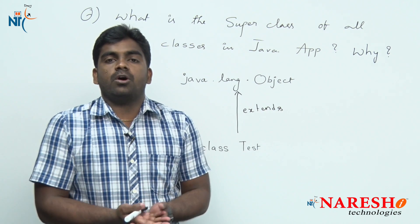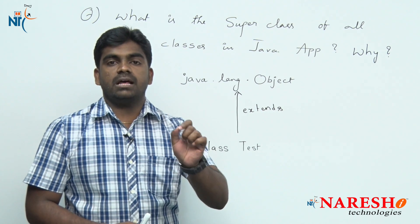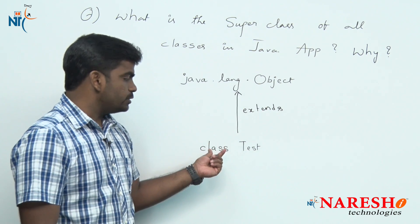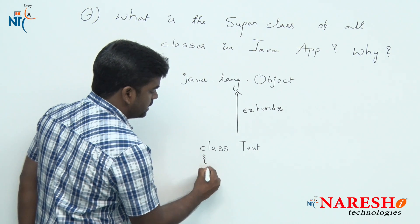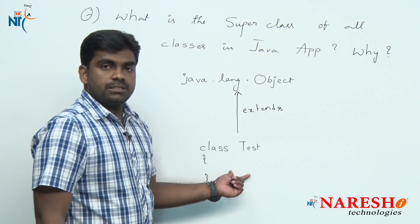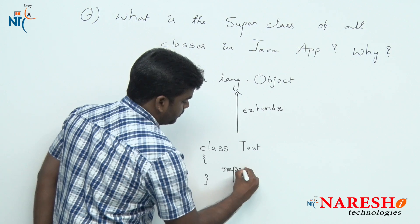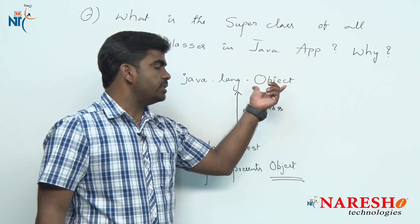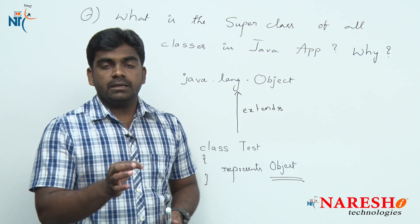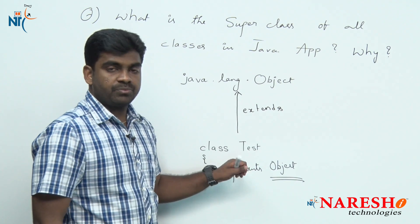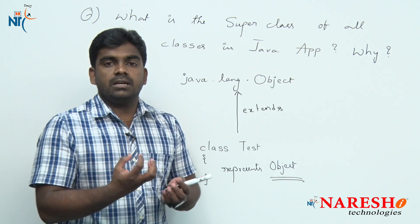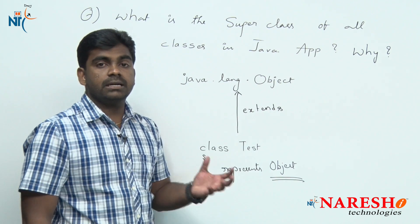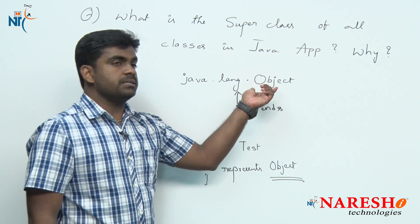How can we define an object? Because object functionality is already predefined — that is, in the Object class. So there is no need to define anything separately. A class is a representation of an object, and if you create any object, how it behaves like an object is by collecting the behavior from the predefined Object class. Internally, every user-defined class or object gets the object behavior from the existing Object class.